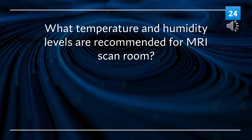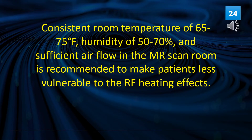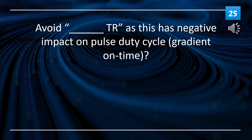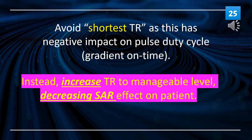What temperature and humidity levels are recommended for the MRI scan room? A consistent room temperature of 65 to 75 degrees Fahrenheit, a humidity level of 50 to 70%, and sufficient airflow are recommended to make patients less vulnerable to RF heating effects. Avoid the shortest TR, as this has a negative impact on the pulse duty cycle; instead, increase TR to a manageable level to decrease SAR effect on the patient.